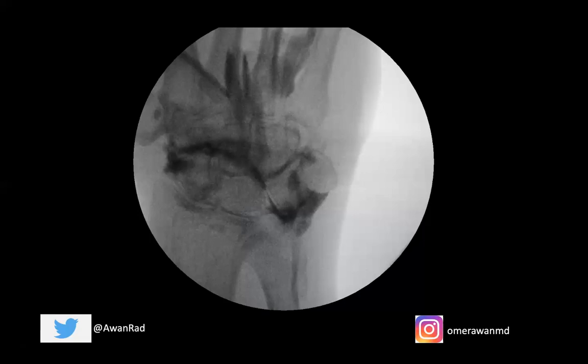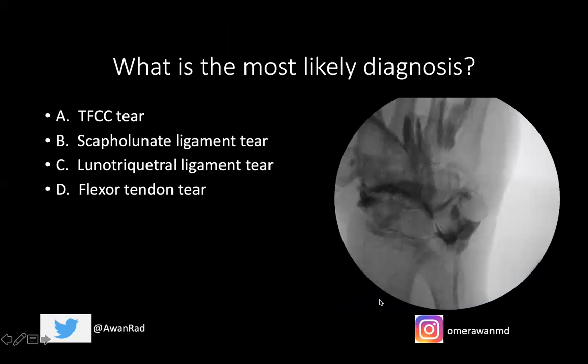The question I have for all of you is: what's the most likely diagnosis we see here? Is this an example of a TFCC tear — a triangular fibrocartilaginous complex tear — a scapholunate ligament tear, a lunotriquetral ligament tear, or a flexor tendon tear?